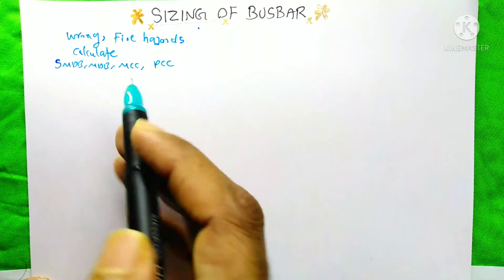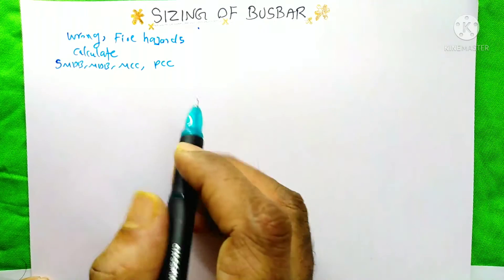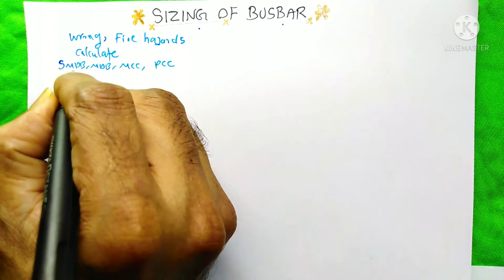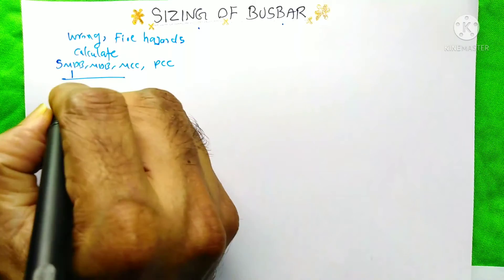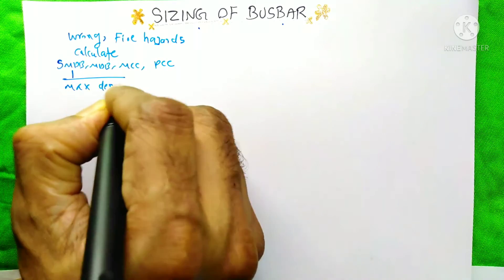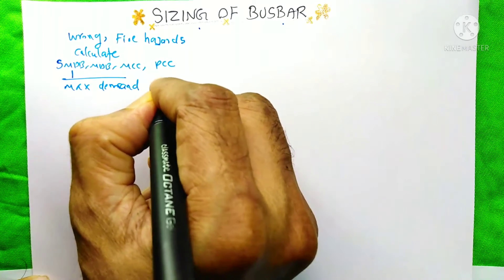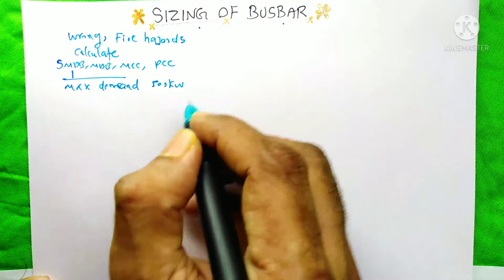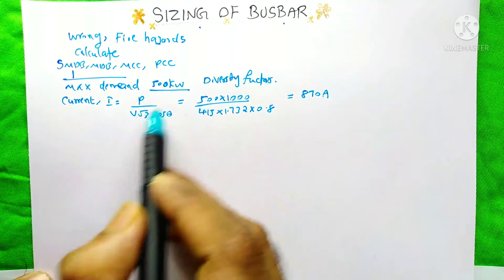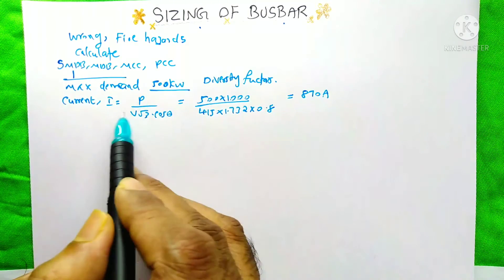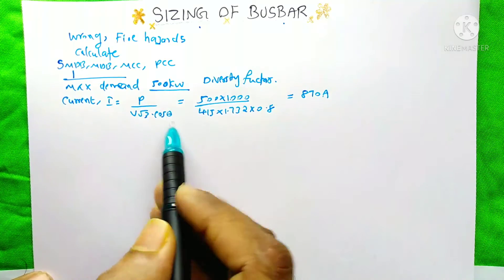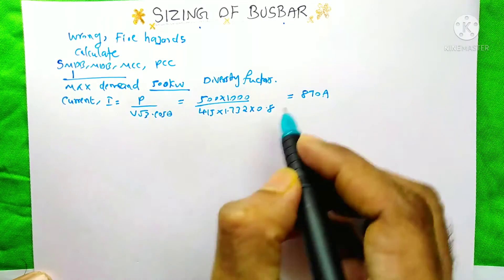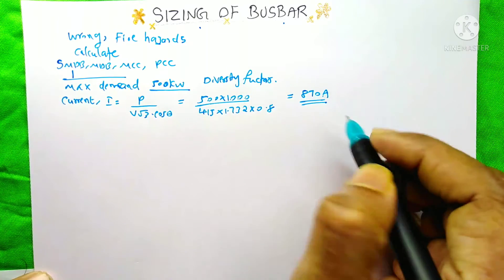For example SNDB, MDB, MCC, PCC — whatever the panel, we do the same calculation for the bus bars. Suppose I am going to calculate the bus bar for this SNDB. I am taking the maximum demand of this SNDB as 500 kilowatt. The current is calculated using I = P / (V × √3 × cos θ), so 500×1000 / (415 × √3 × 0.8) = 870 amps.